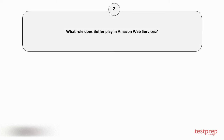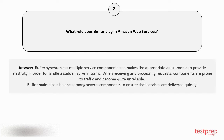Question number 2: What role does Buffer play in Amazon Web Services? Buffer synchronizes multiple service components and makes the appropriate adjustments to provide elasticity in order to handle a sudden spike in traffic. When receiving and processing requests, components are prone to traffic and become quite unreliable. Buffer maintains a balance among several components to ensure that services are delivered quickly.